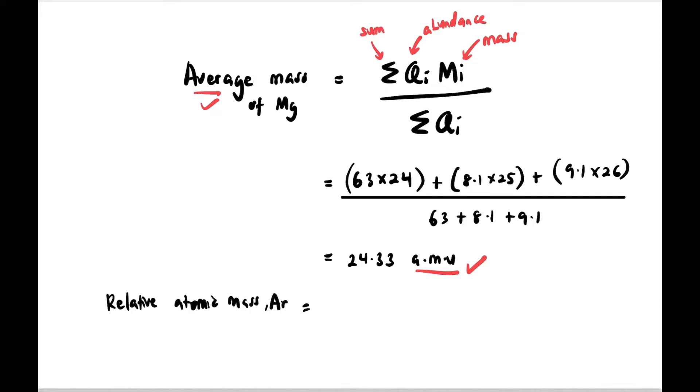How about if the question asks for relative atomic mass of Mg? If the question asks for Ar (relative), we take the average mass and divide by 1/12 times 12 AMU. Where does 12 AMU come from? 12 AMU is the mass of carbon-12. The answer is 24.33 with no unit. Remember, average and relative mass have the same value, but one has unit AMU and the other has no unit.